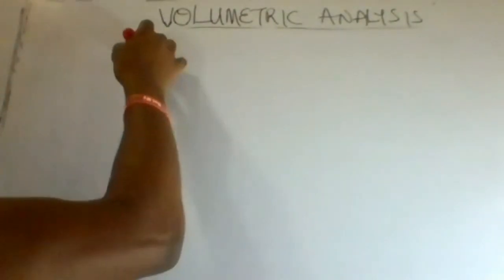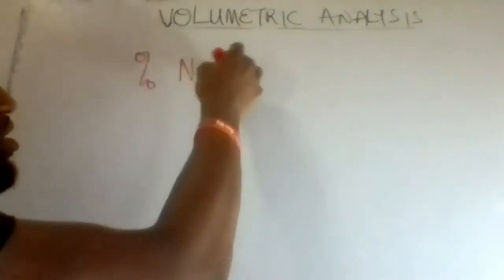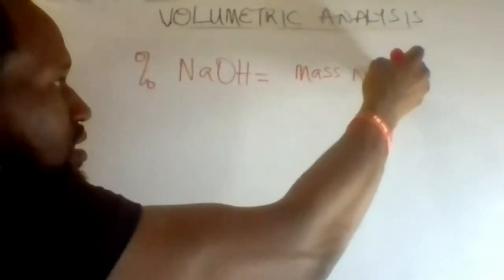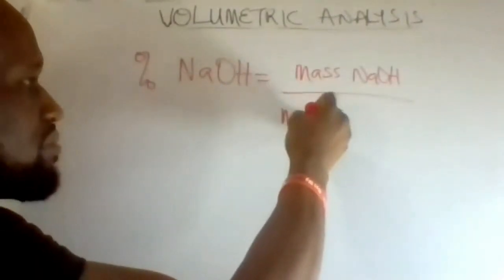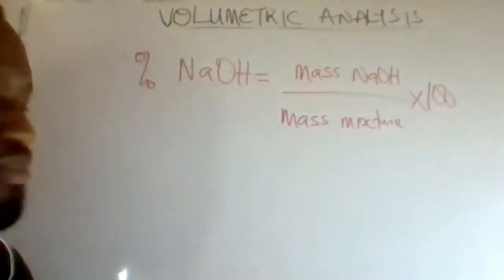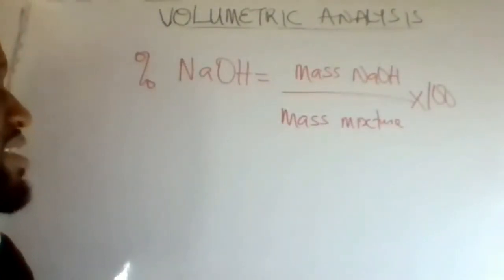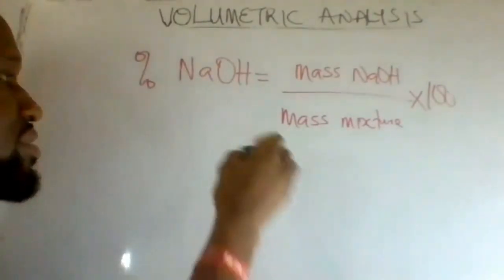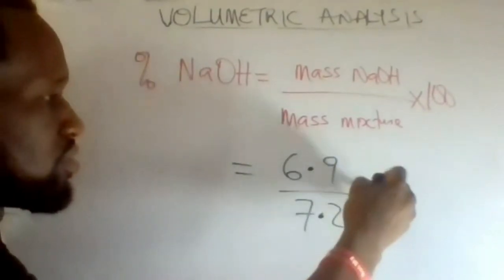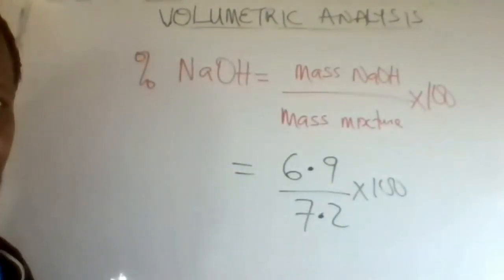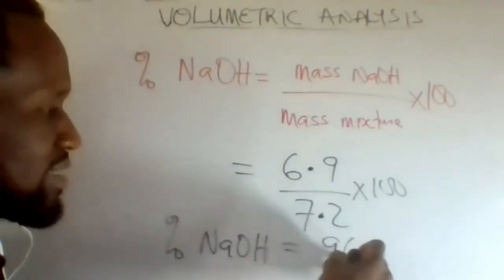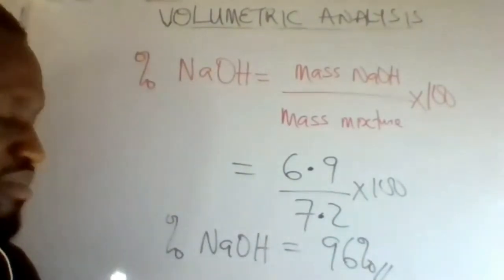The percentage of sodium hydroxide in this mixture is the mass of sodium hydroxide divided by the mass of the mixture, multiplied by 100%. This is equal to 6.9 divided by 7.2, multiplied by 100%. The percentage of sodium hydroxide equals 96%.